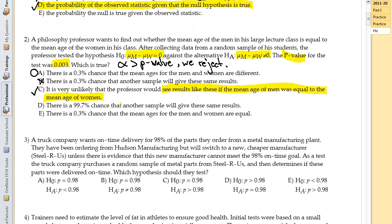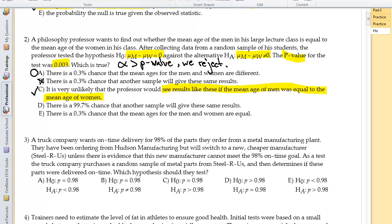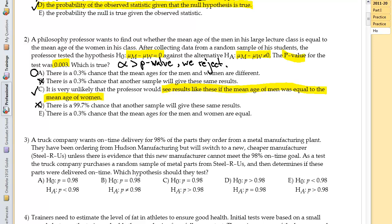There is a 99.7% chance that another sample will give these same results. No. There is a 0.3% chance that the mean ages for men and women are equal. This is something where people mess up the p-value. The p-value doesn't tell you the probability of the chance that they are equal. It tells you the probability of a result if the null hypothesis is true. So you have to be really careful with this language right here. A smaller p-value doesn't mean a smaller chance that the mean ages are equal.